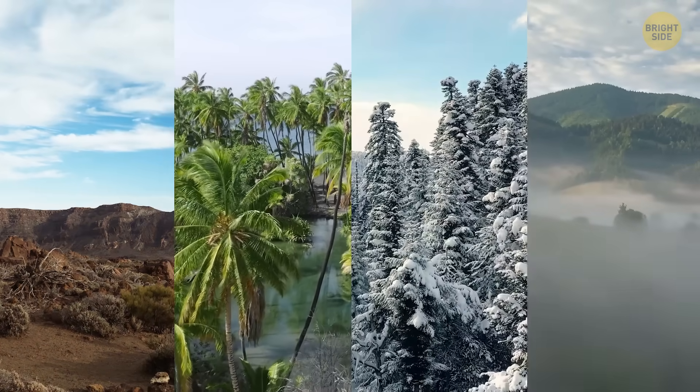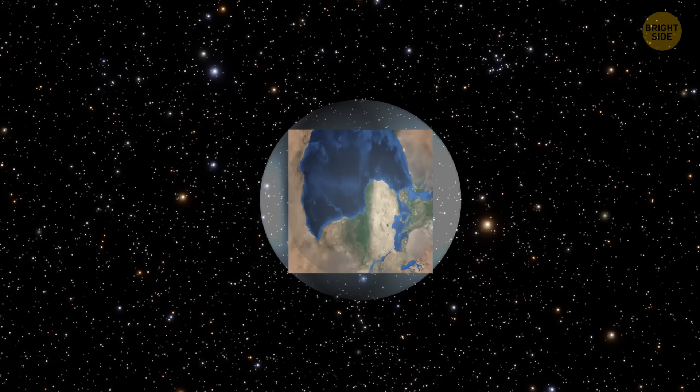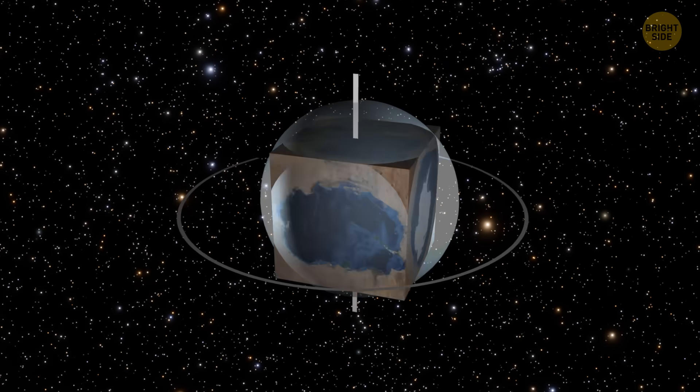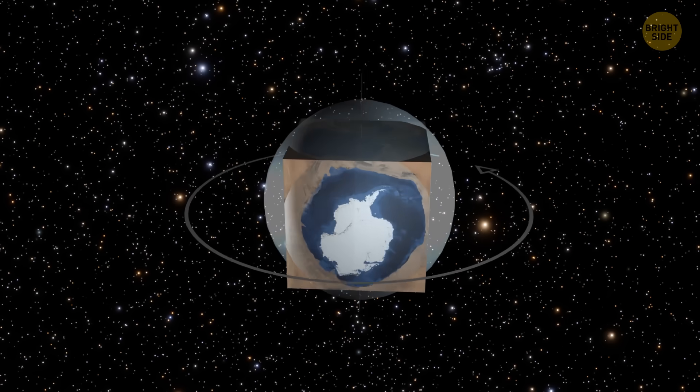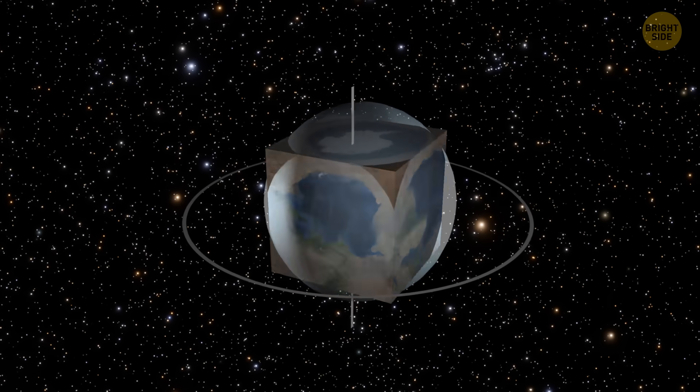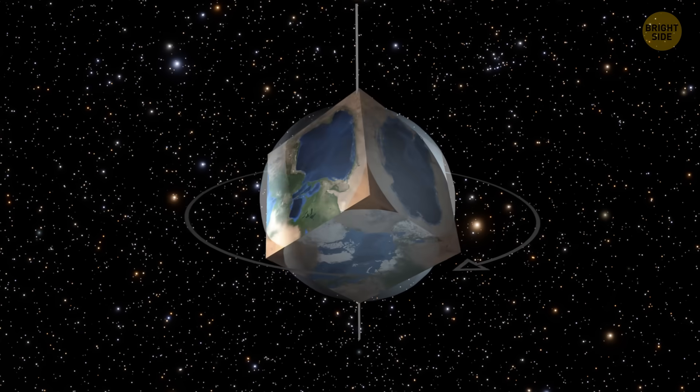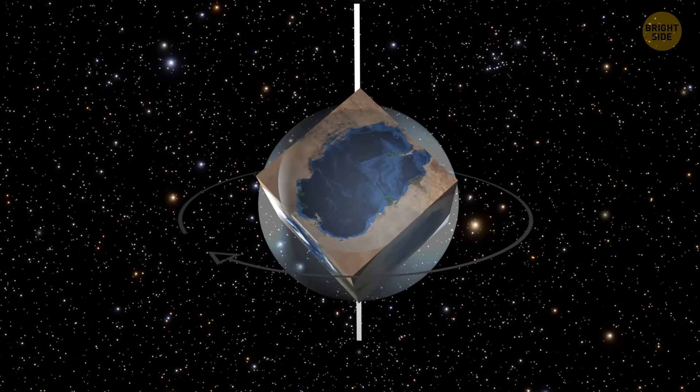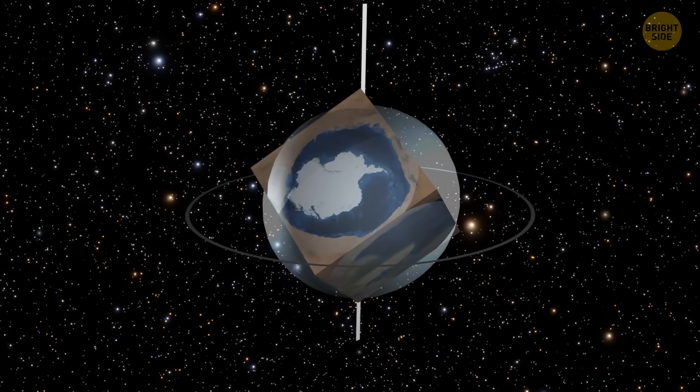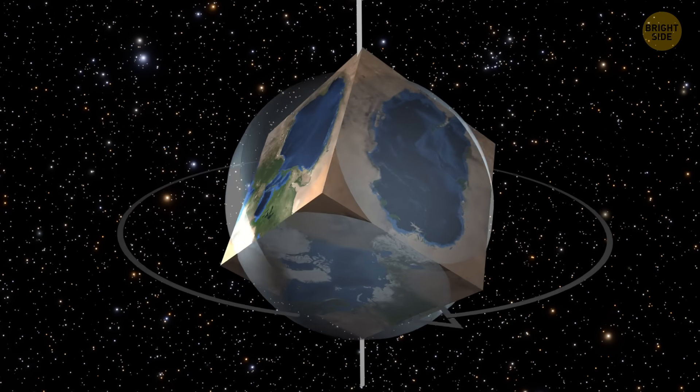The climate on the cube Earth would depend on how it would rotate. If it spun on an axis through two faces, then the climate would be similar to what we have on Earth now, but more extreme. The top and bottom faces would be polar, while the other four would enjoy an equatorial climate. However, if the cube Earth rotated through its corners, each side would have a climate with more moderate temperatures and precipitation. Say goodbye to extreme weather, but also wave goodbye to your equatorial paradise.